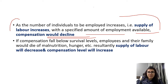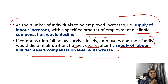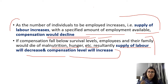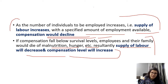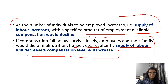If compensation falls below survival levels, employees and their families would die of malnutrition, hunger, etc. Resultantly, the supply of labour will decrease and compensation level will increase again. When people die, the number available to do jobs declines, so compensation rises. This cycle is the Iron Law of Wages — a continuous cycle of wages hovering around the subsistence level.